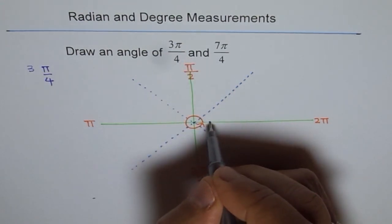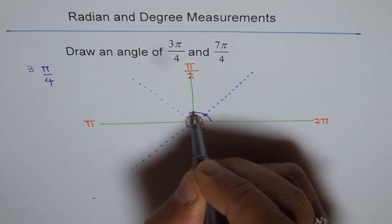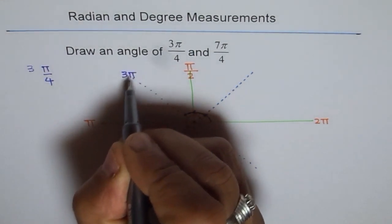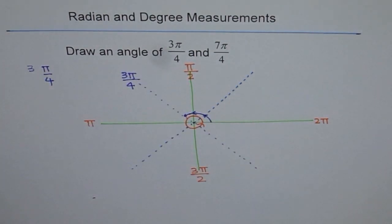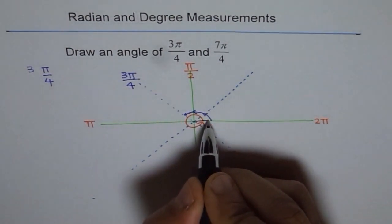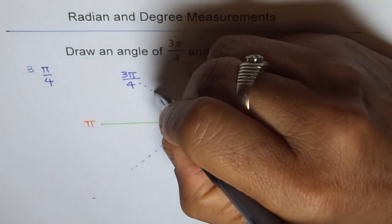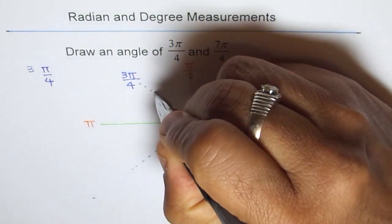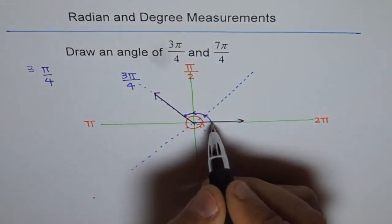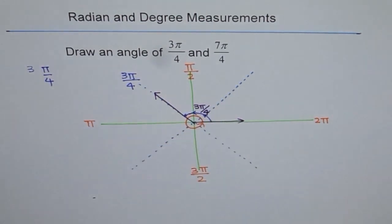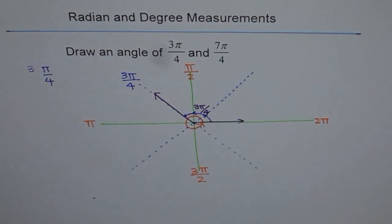So 3π/4 is 1 π/4, 2 π/4, 3 π/4. That's it. So this is our 3π/4. That's how we draw our angles. So if I draw my angle with initial arm along the x-axis which is this and the terminal arm along this line which is this, then I make an angle of 3π/4. That is how we draw angles in radians.